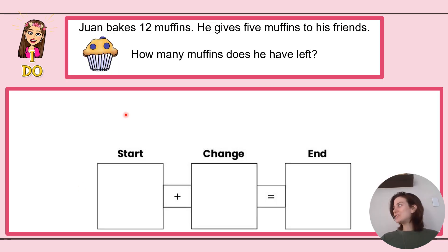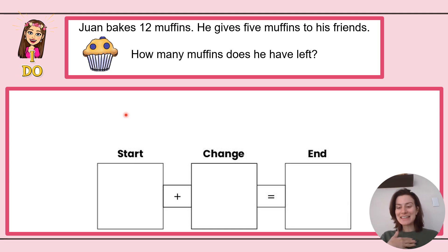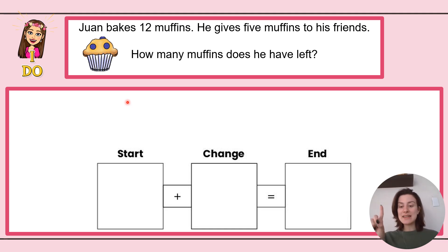Let's go ahead and have some I Do time where I show you how. This is a time for you to just actively listen so that you can practice in We Do and You Do time. The very first thing we want to do in a story problem is Step 1: understand it — read the problem.